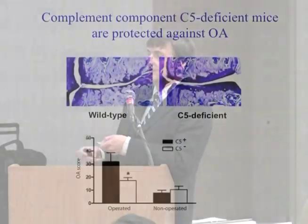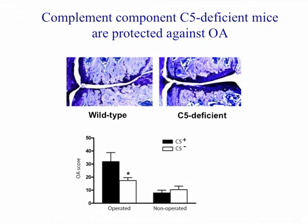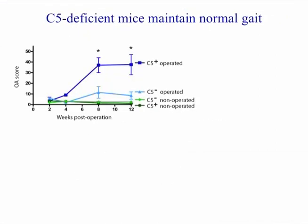We wanted to further validate these findings using what I term reverse translation — an animal model to validate our genomic and proteomic findings in humans. Basically, if you take wild-type mice and surgically destabilize their joint, they develop severe bone-on-bone osteoarthritis. Whereas if you take complement-deficient mice, the complement deficiency protects their cartilage from degeneration and protects the mice against osteoarthritis. We can also show that there's a functional benefit to the mice when we protect them from osteoarthritis.